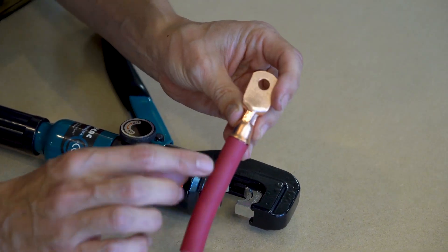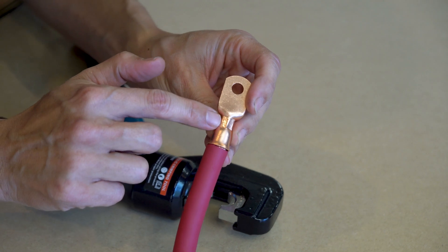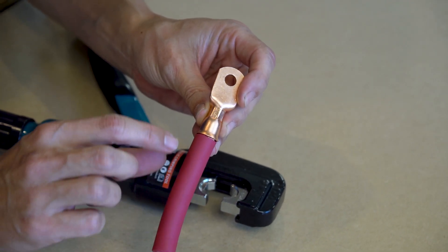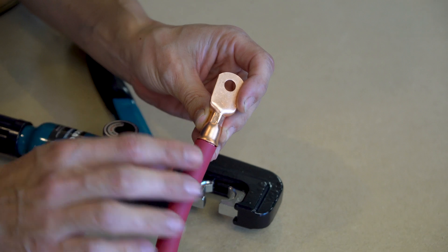For larger lugs, we like to make two crimps. One on the top, and one on the bottom. So, we're going to put this lug back into the crimper to make a second crimp.